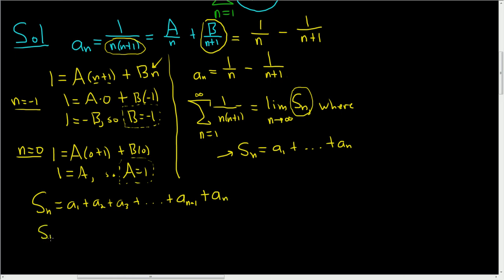All right, now let's carefully plug everything in. So s sub n is equal to a sub 1. Well, you just look here and replace all of the n's with 1's. So it's 1 over 1, which is 1, minus 1 over 2, right? Because 1 plus 1 is 2. That is a sub 1. Okay, plus a sub 2, that's going to be 1 over 2 minus 1 over 3. So this here is a sub 2. Plus a sub 3, so that's 1 over 3 minus 1 over 4.